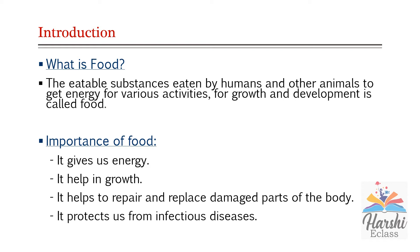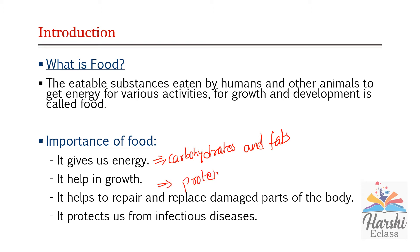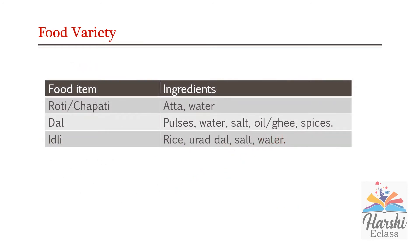Food contains different nutrients. Mainly, carbohydrates and fats give us energy. Proteins help in growth, repair, and replacement of damaged parts. Food also contains vitamins and minerals. Vitamins and minerals together are called protective foods because they protect us from infectious diseases.